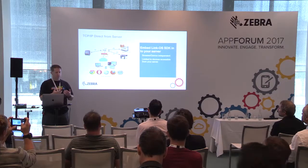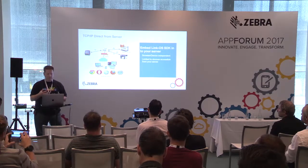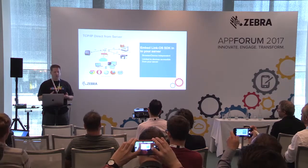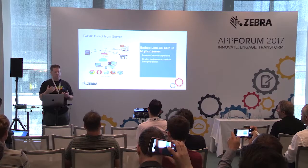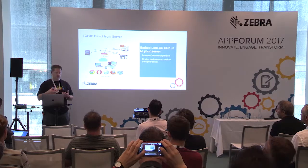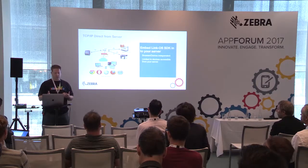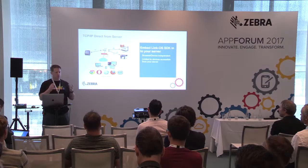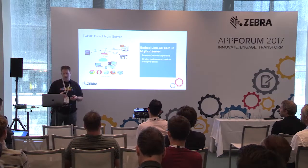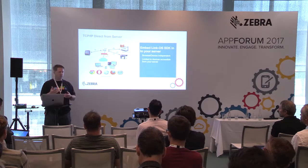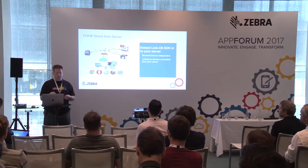With legacy printers and LinkOS printers, you can support a TCP direct connection from your back-end server. You embed the SDK into your server — the server needs to be an on-premise server — and you can connect all the printers within the four walls from that web application server. It's simply a matter of making a TCP connection to a printer on the network. As long as you're within the four walls, it's a perfectly fine solution, but you do need a way to link the mobile computer to the correct printer.